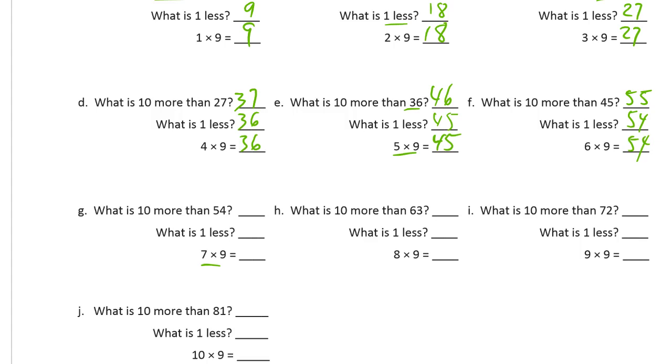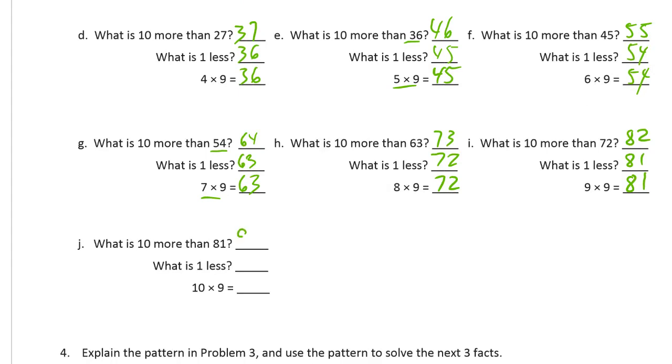For seven nines, we're going to start with six nines is 54. 10 more is 64. One less is 63. So seven nines is 63. To figure out eight nines, if you know seven nines, 10 more than 63 is 73. One less is 72. So eight nines is 72. And 10 more than 72 is 82. One less is 81. So nine times nine is 81. And what's 10 more than 81? It's 91. And what's one less? It's 90. So 10 nines is 90.